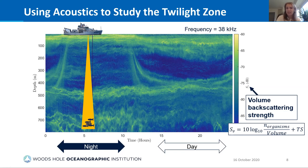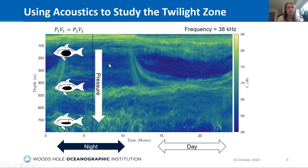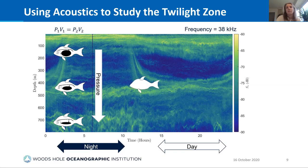In the mesopelagic it gets more complicated. For many fish, the part that contributes most to target strength is the swim bladder — a gas-filled organ that helps regulate buoyancy. As depth increases, so does pressure, and the shape of the swim bladder changes, altering how it scatters sound. So the same fish measured at 200 meters versus 800 meters might have entirely different target strengths. Not all fish have swim bladders, and we don't know what fraction of mesopelagic fish do — some may even lose them with age.